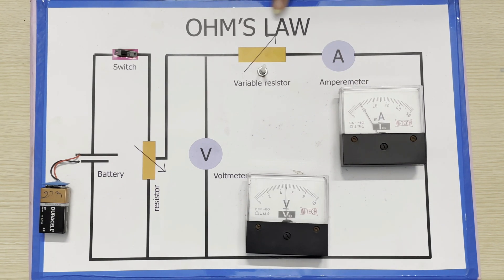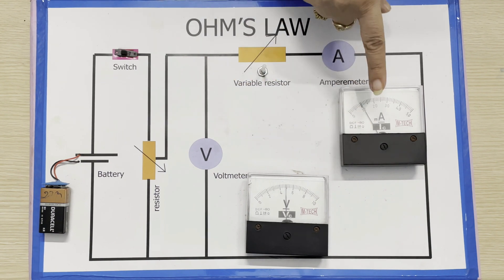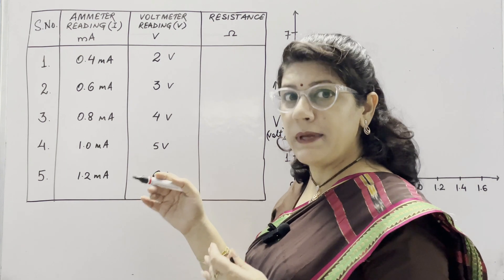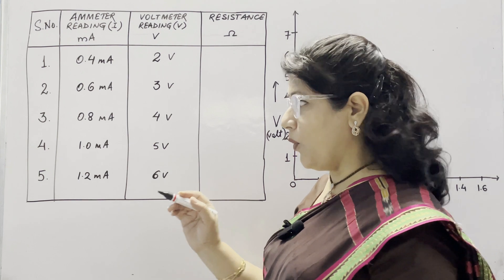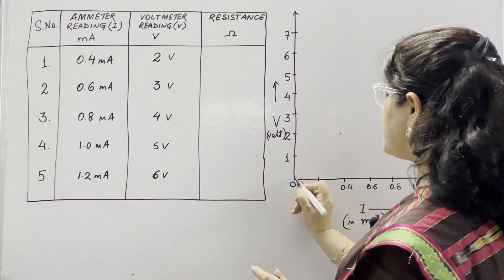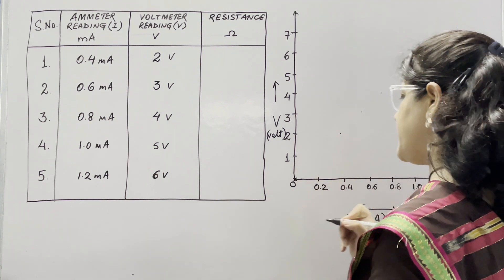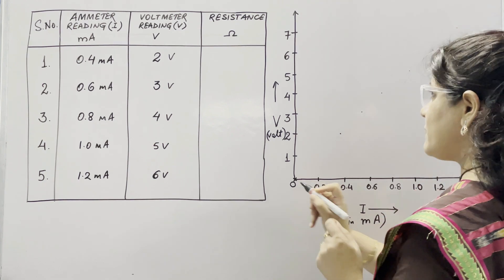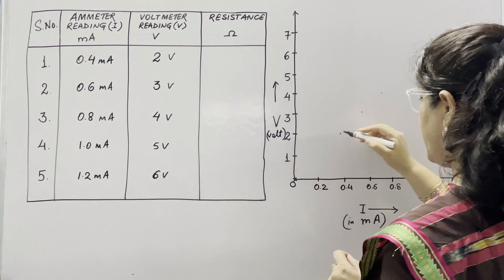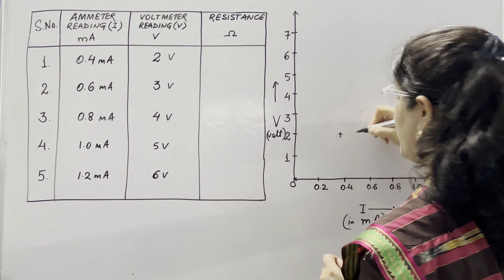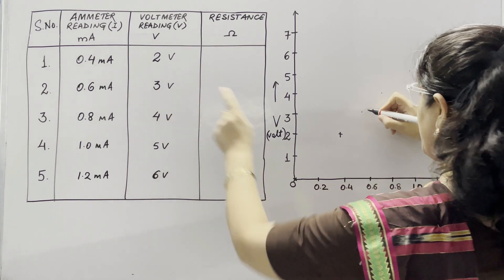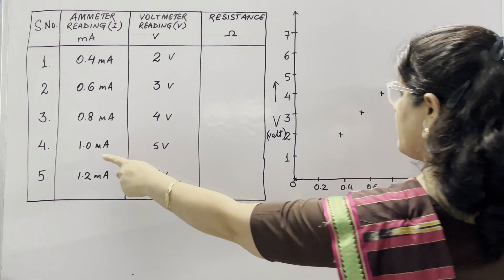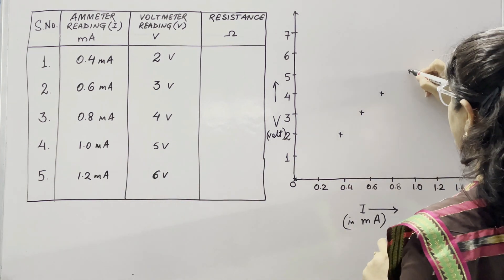If I further increase the voltmeter value to 4 volt, the corresponding value on the milliammeter is 0.8 milliampere. Now for the verification of Ohm's law, we are going to plot these values on a graph. We have seen that corresponding to zero reading on voltmeter, we obtained zero on milliammeter also, so this graph will start from the origin. First value: 2 volt with 0.4 mA; then 3 volt with 0.6 mA; 4 volt with 0.8 mA.